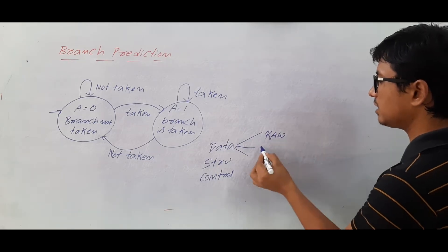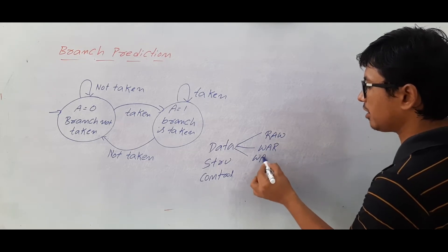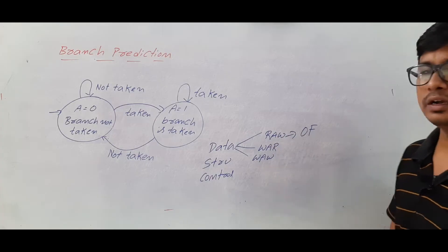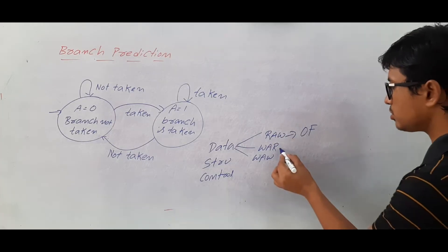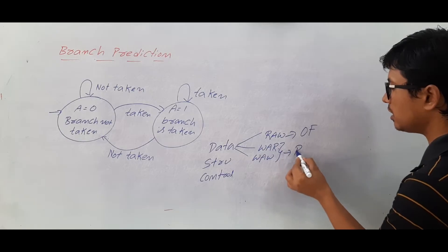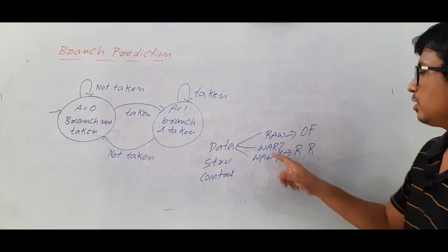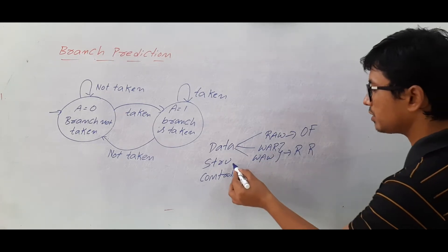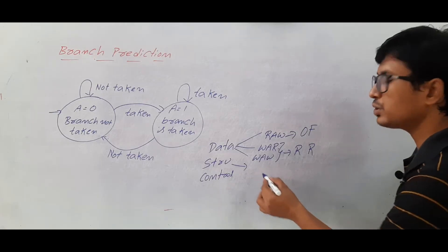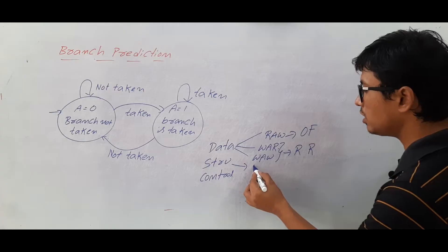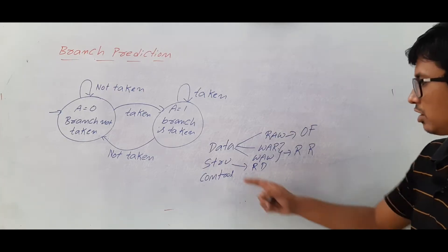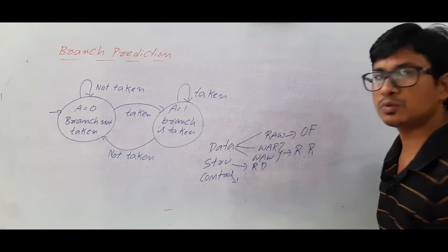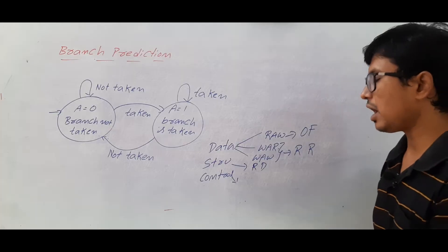I have discussed the types of data hazards such as read after write, write after read, and write after write. I discussed a solution called operand forwarding to avoid the read after write hazard, and also register renaming to avoid write after read and write after write data hazards. Then we discussed structural hazards and how to minimize them with resource duplication.